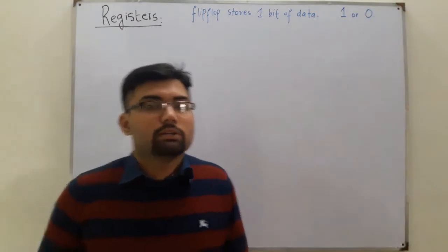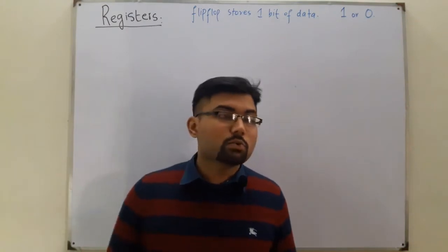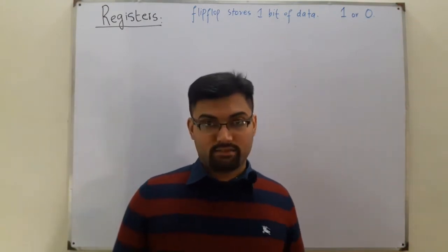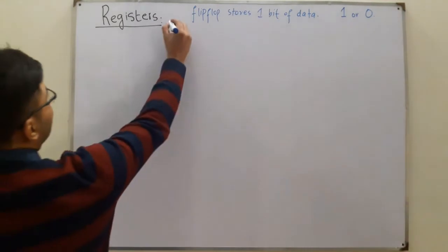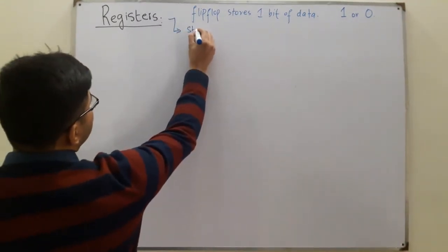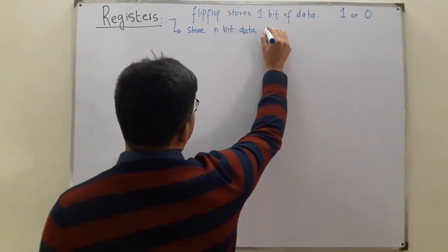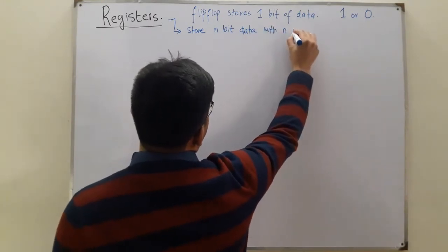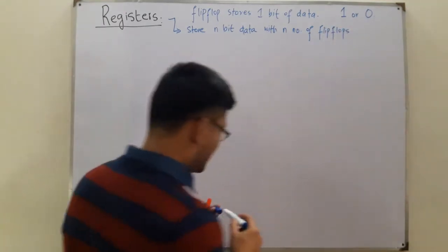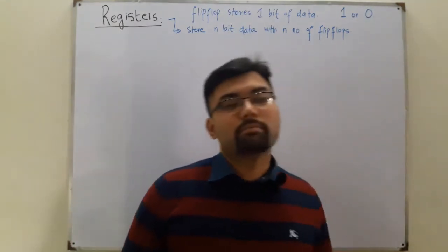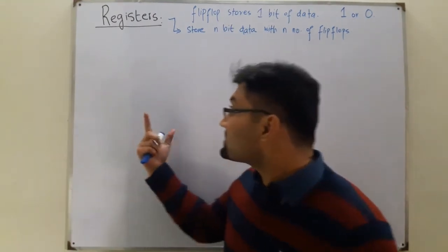A question arises: what if we want to store multiple bits of data? If I want to store '10' — which is two bits — at the same time, how can I save it? For that we have registers. Registers store n-bit data with the help of n number of flip-flops. You combine flip-flops together in some manner, and you can save multiple bits of data.